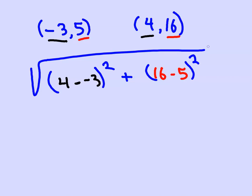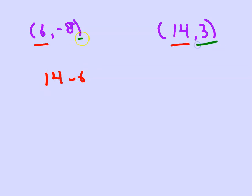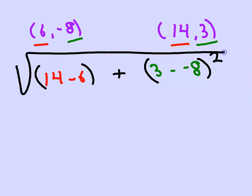Suppose you give me (6, negative 8) and (14, 3). Once again, to get the horizontal side of the triangle, I subtract the X's: 14 minus 6. To get the vertical side of the triangle, I subtract the Y's: 3 minus negative 8. Then I take each of those, square them, add them together, and square root, just like before.